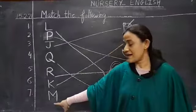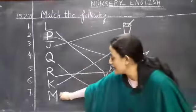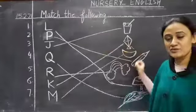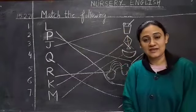Next alphabet is M. So we will match M with moon. M for moon. This way we will do it in your home also, letters with the objects. Thank you.